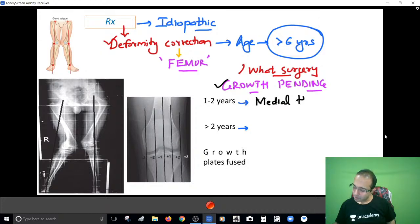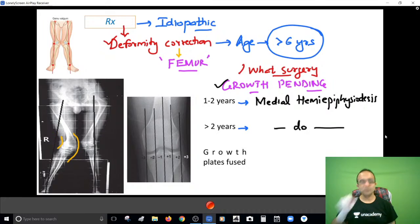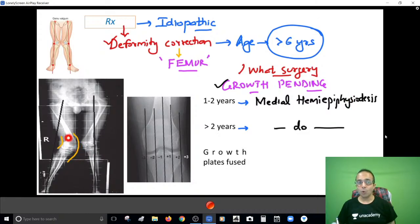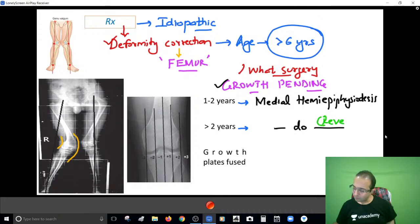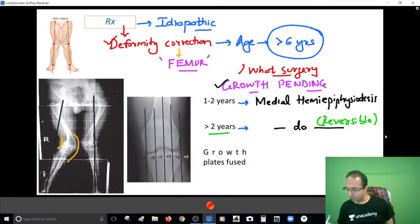When growth is pending, you go with a medial hemi-epiphyseodesis. In genu valgum, the medial side is growing a lot, so you damage or fuse the growth plate on the medial side - epiphyseodesis - so medial side growth stops, only the lateral side grows, and with growth the deformity corrects itself. If growth pending is more than two years, you must do a reversible hemi-epiphyseodesis, otherwise you might get the opposite deformity. If growth pending is one to two years, a permanent epiphyseodesis is done.